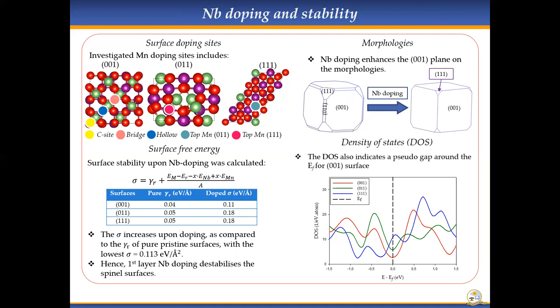We checked the morphology of these surfaces compared to the pristine surfaces. We found that doping with niobium on the top layers of lithium manganese oxide surfaces enhances the 001 surface and diminishes the 111 surface. On the morphology of the doped surfaces, the 011 surface is not visible mainly because of the difference of surface energies compared to the 001.